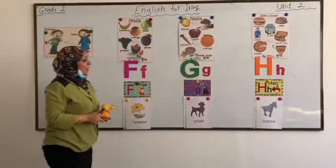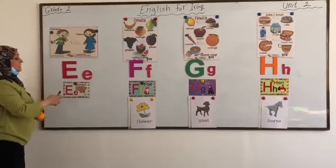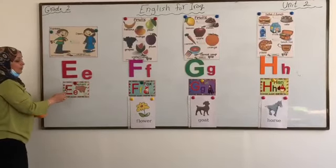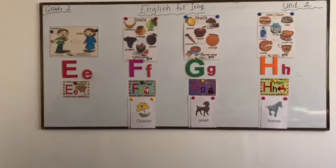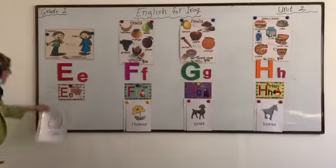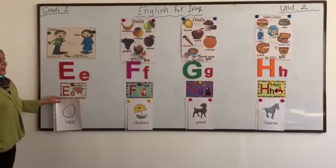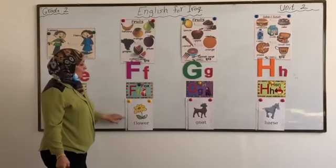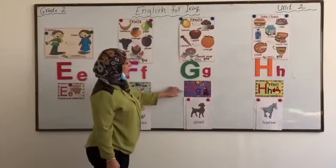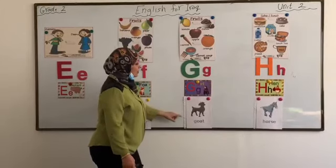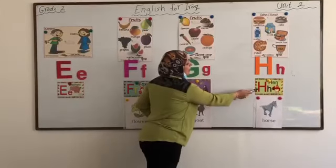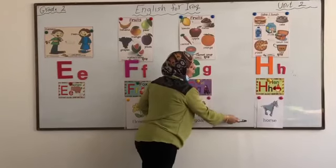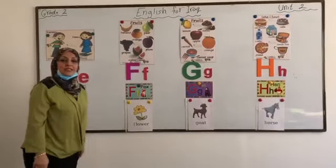Well done, everyone. Let's repeat for the last time. E-E Elephant. E-E Egg. F-F Fox. F-F Flower. G-G Goat. H-H Hen. H-H Horse. Thank you for this lesson. Goodbye.